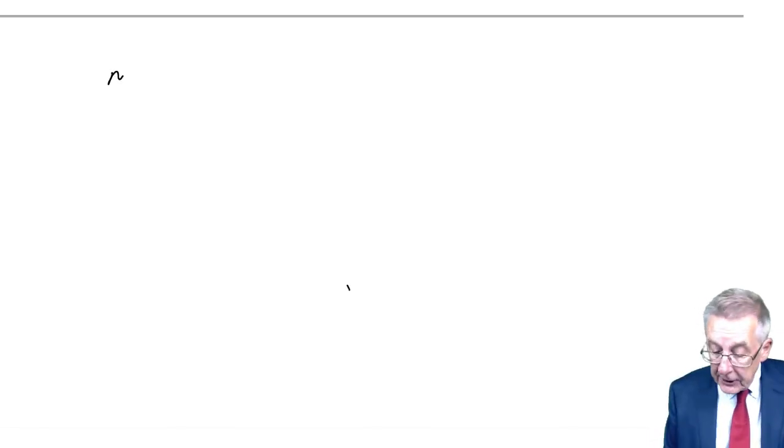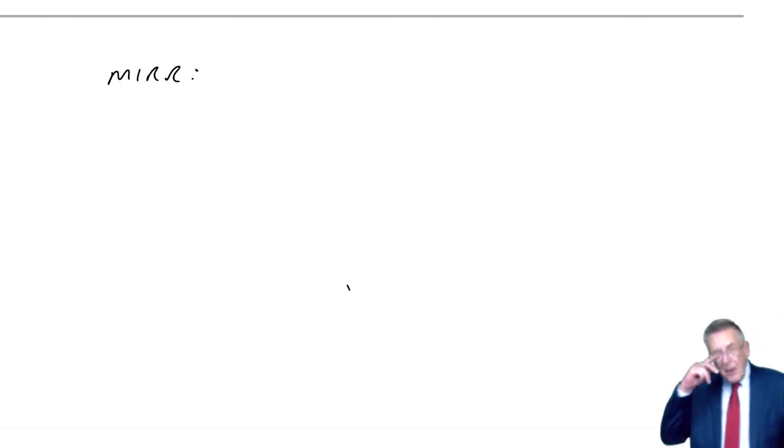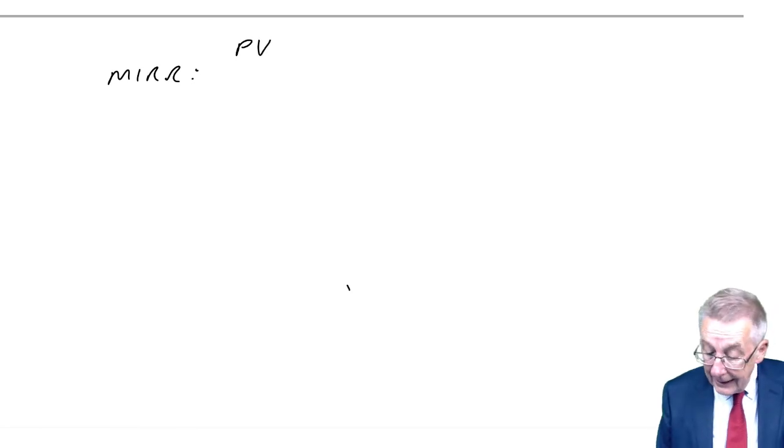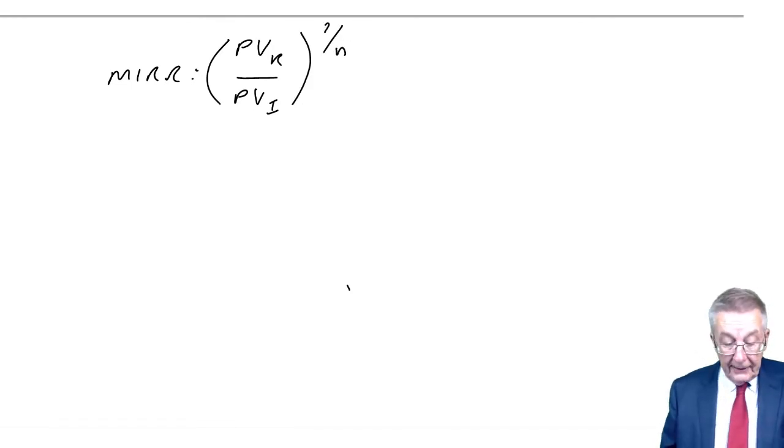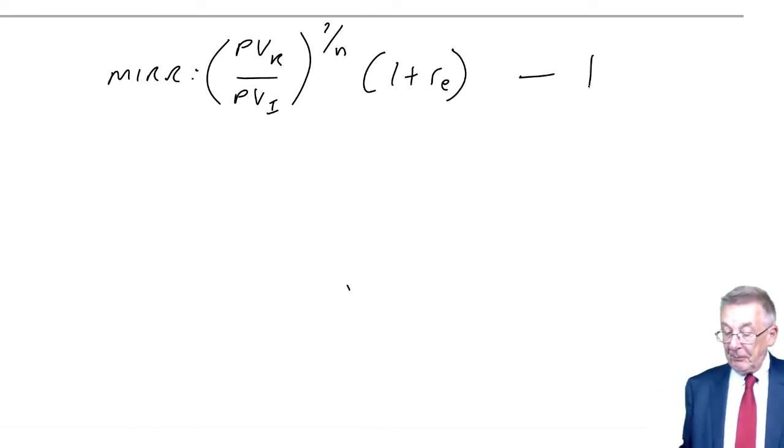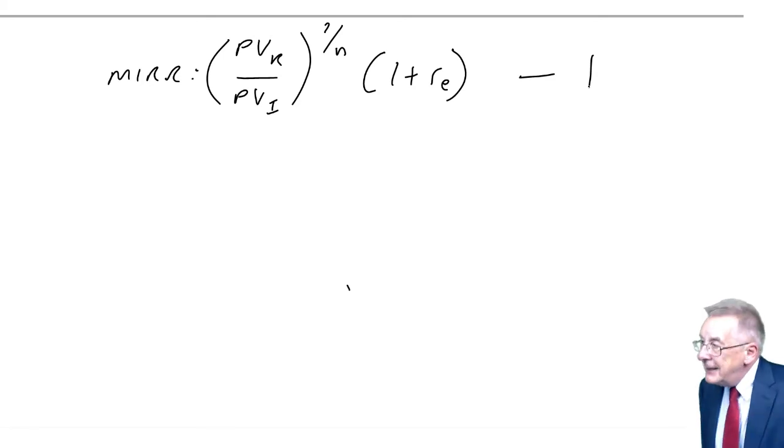Let's just do the arithmetic first, and then I'll basically explain what it's doing. But there is a formula, and you've given it on the formula sheet, and I've typed it out in the notes. The modified internal rate of return is PVR over PVI to the power 1 over N times 1 plus RE minus 1.